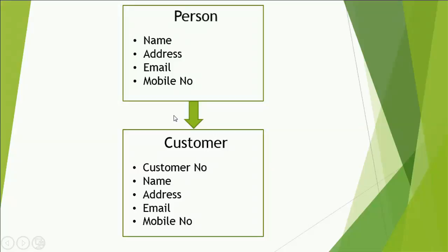Here is the Person class and the Customer class. The Customer class has the same attributes as the Person class, but it has an additional attribute — a customer number or ID. So instead of writing all the same things as in Person inside the Customer class, we will just inherit the Person class into the Customer class, and write only the additional attribute: customer number or ID.